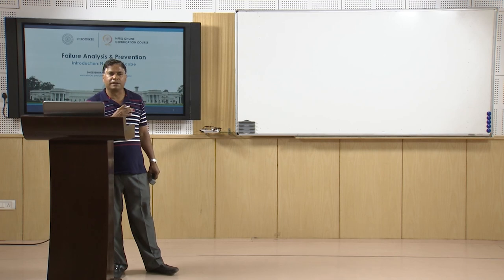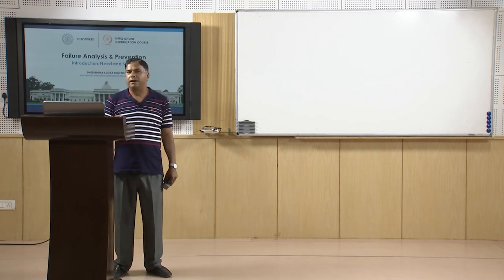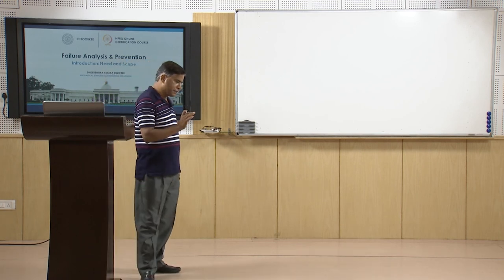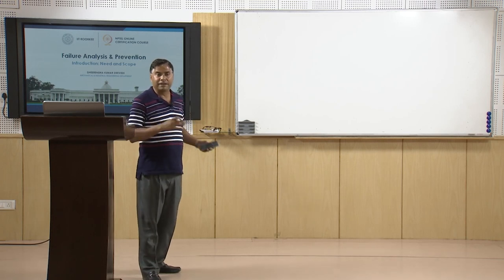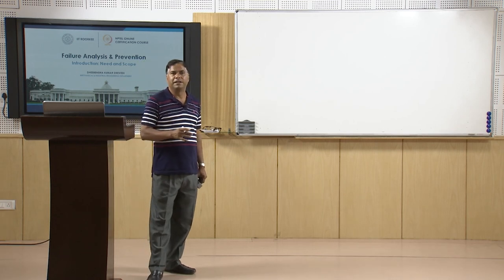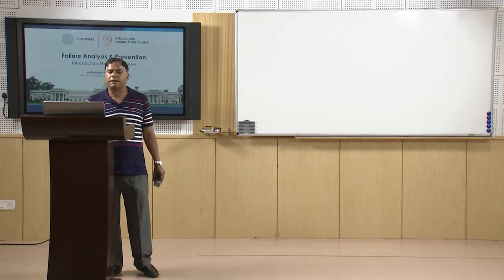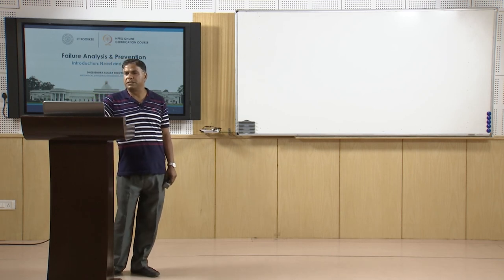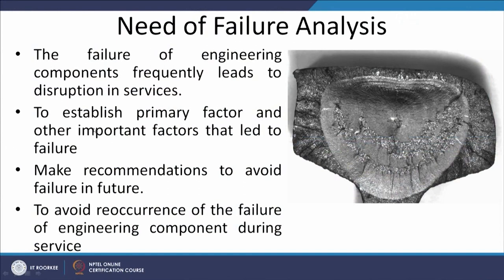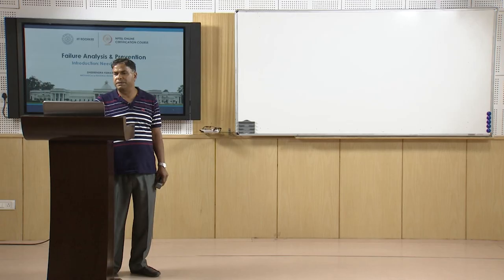These were some of the failures which happened internationally and nationally, underlining the need to look into technical aspects to avoid recurrence of such failures — because whenever such failures occur they lead to huge loss of life, property, and reliability, and very adversely affect the public. Failure of engineering components frequently leads to disruption of services; therefore it is important that the primary factors causing failure are established so that suitable recommendations can be made to avoid recurrence.